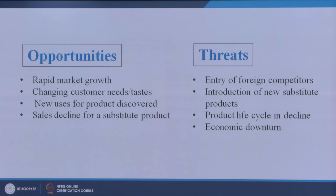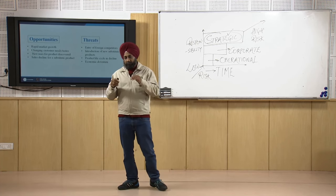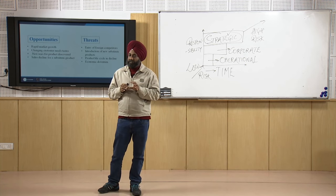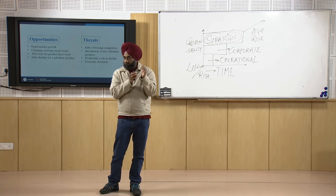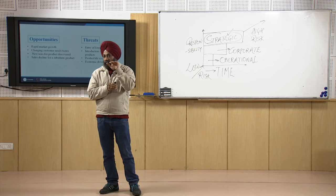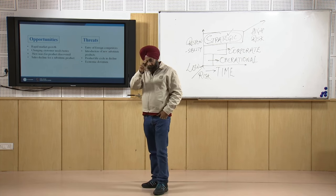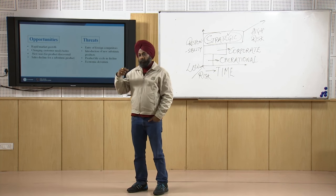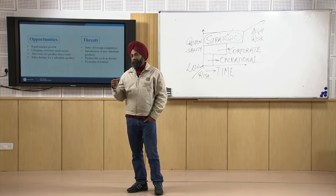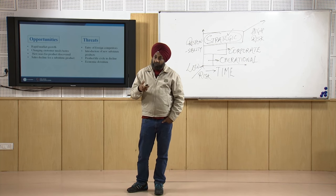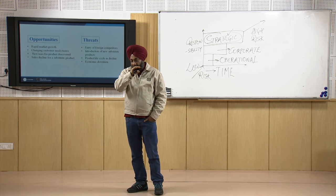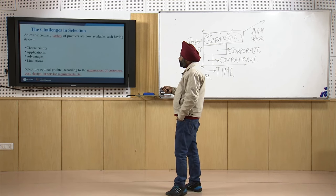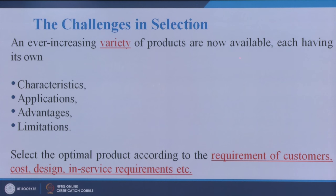Threats in the current Indian scenario include entry of foreign competitors, introduction of new substitute products, product life cycles reaching the decline stage, and economic downturns. A company doing SWOT analysis may find many of its products are moving toward the declining stage of the product life cycle — which we covered in the previous lecture — and they must be cautious as products approach the end of their maturity curve.